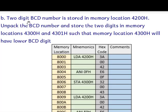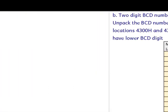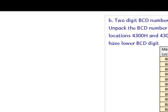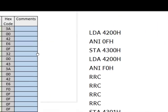Now let us go to the second program. A two-digit BCD number is stored in memory location 4200. We need to unpack the BCD number and store the two digits in memory locations 4300 and 4301, such that 4300 holds the lower BCD digit. So if the packed number is 23, we have to separate it into 02 and 03.